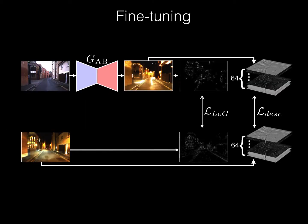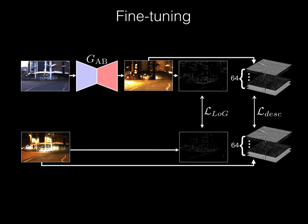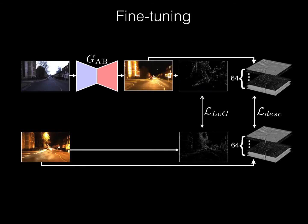The performance of the generator can be further fine-tuned if small amounts of registered image pairs are available. Using an RTK GPS ground truth, we select image pairs that have negligible translation and rotation between them, and directly apply the detector and descriptor loss between the transformed image and the target image.